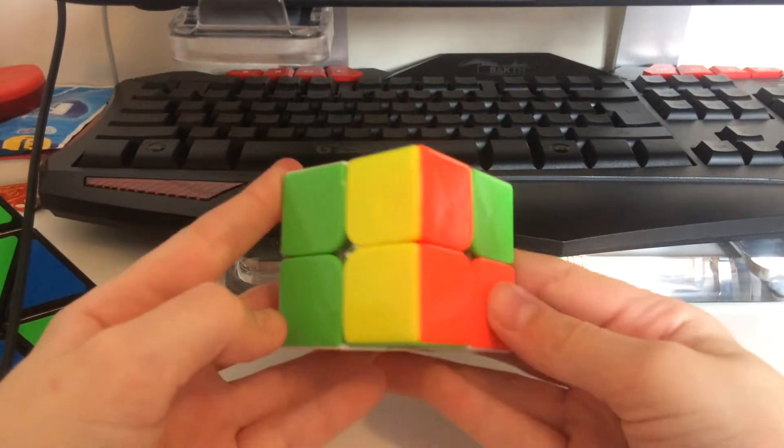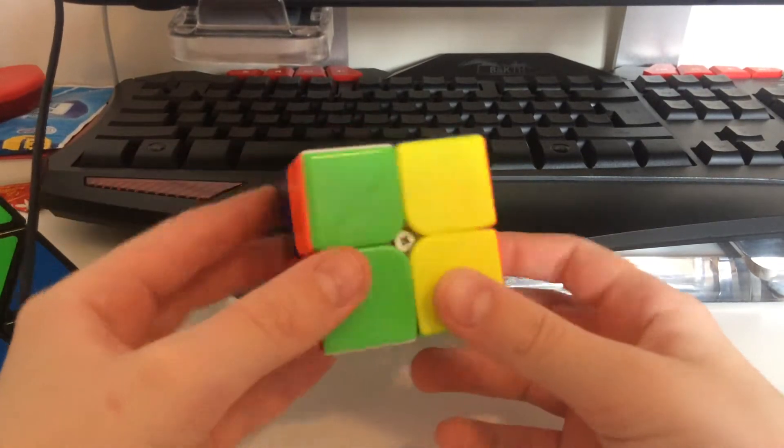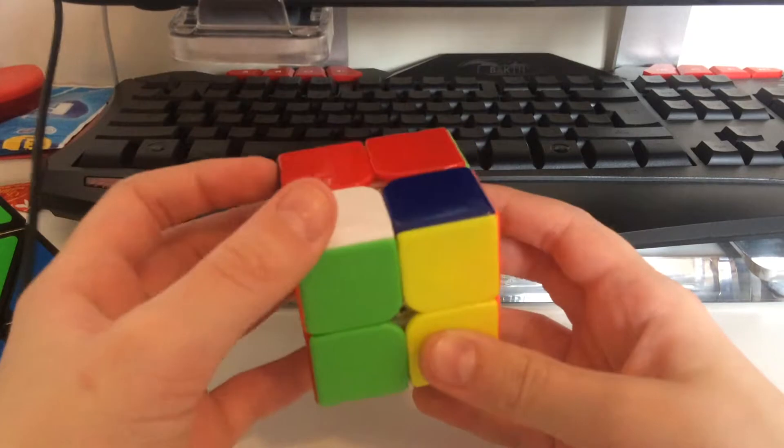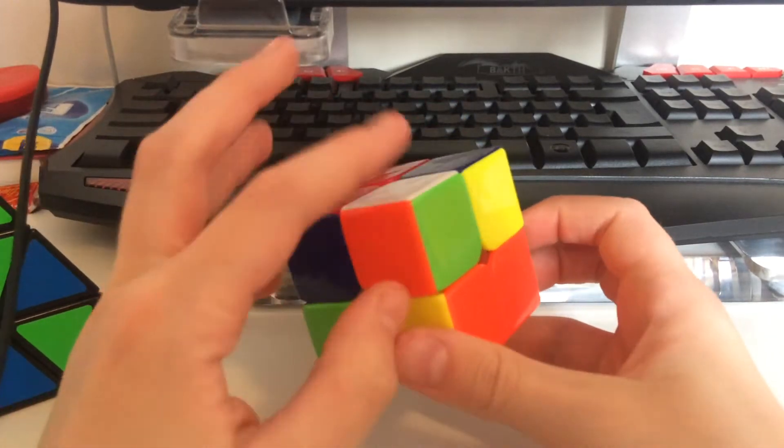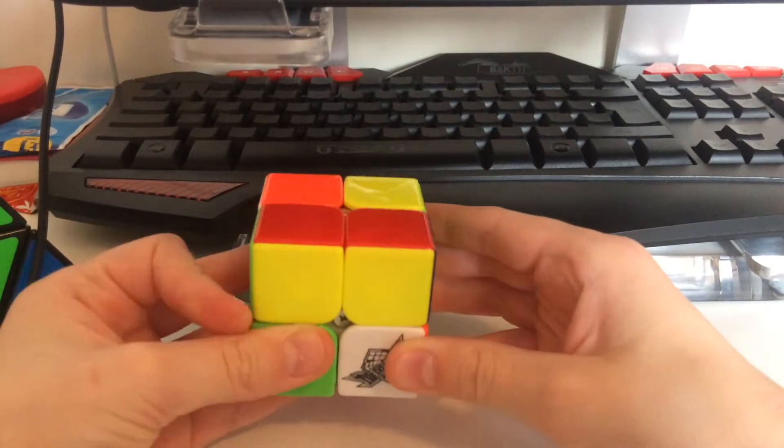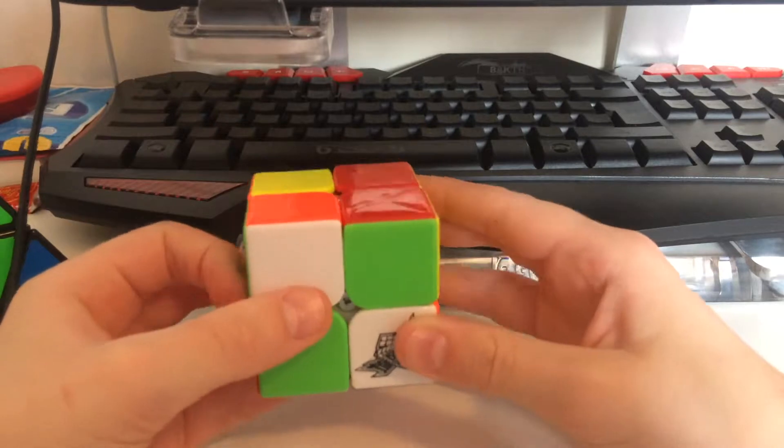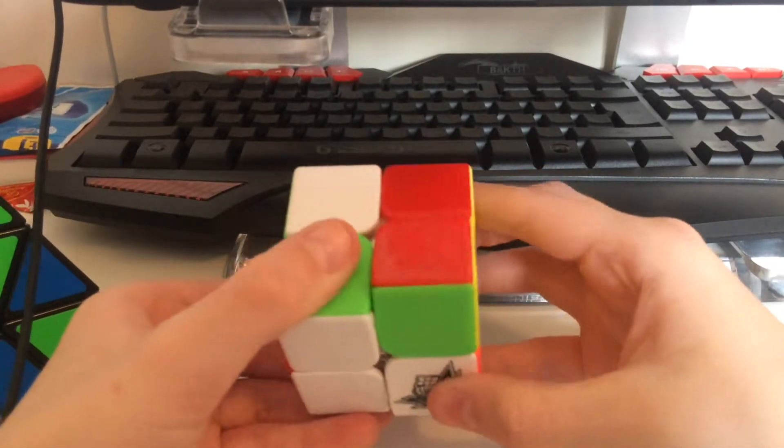Now, we've got orange and green we need to get, so we need to look for the orange, green, and white corner piece, which is here. Put it there. Now, because it's on the top, you want to put it up, then put it across twice, then put that back down.